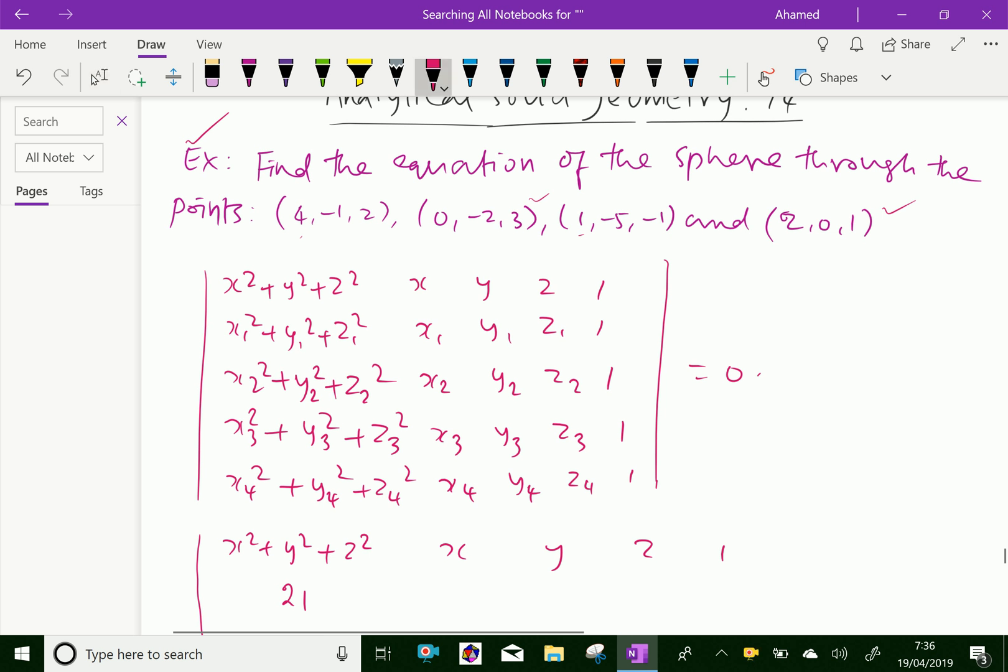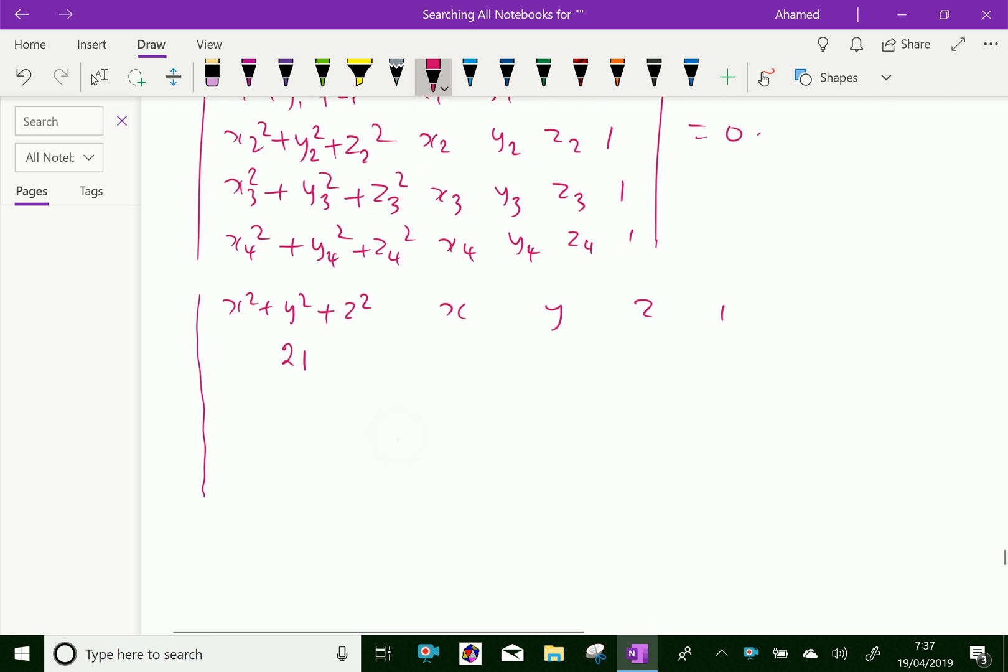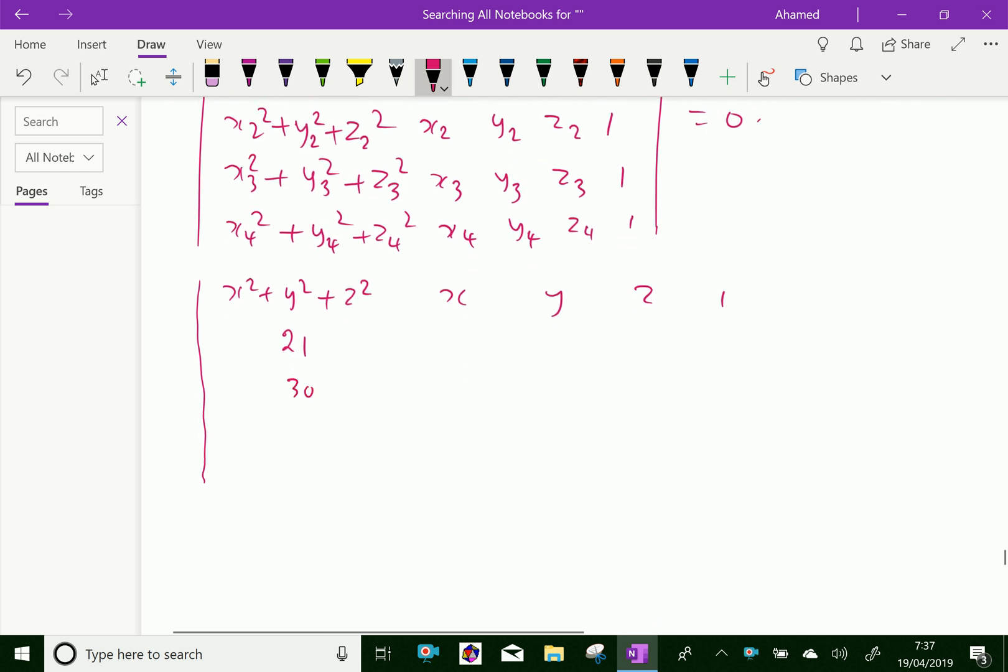Then, second point: second point is (-1)² is 1, (-2)² is 4 and 5² is 25 and 0². That is, here, 1 + 4 is 5, 5², 1² is 4, 1² is 1, 2² is 4, that is 5 and 5² is 25, so 30. Then,